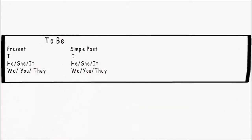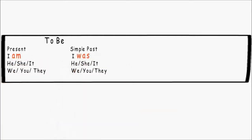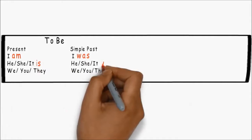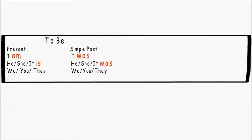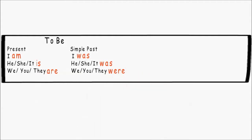To be, present and simple past. I am, past tense, I was. He, she, it is, and was. You, we, they, are, and were.